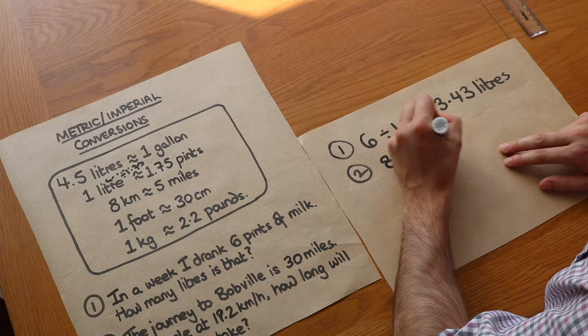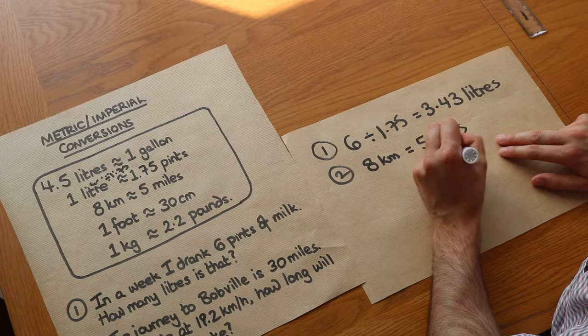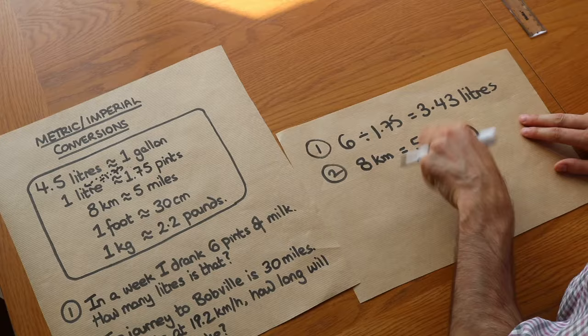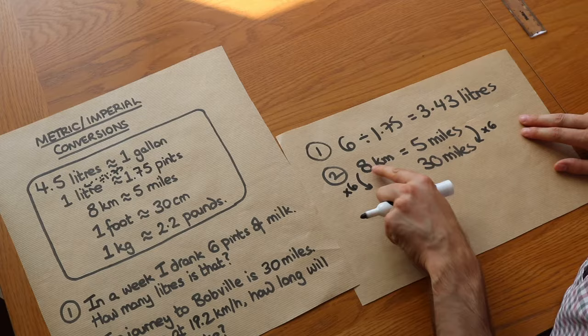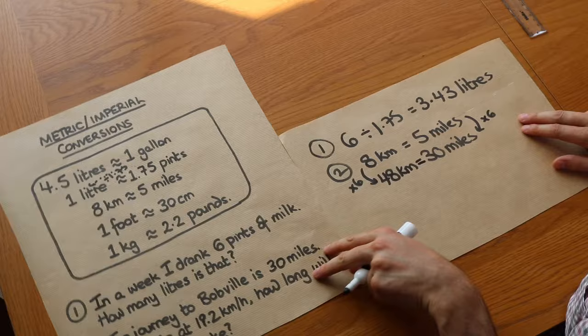So if we've got that 8 kilometres is equal to 5 miles approximately, then if we have 30 miles, can you see that that's 6 times more? 30 is 6 times more than 5, and therefore we've got 6 times as many kilometres. So 8 times 6 is 48 kilometres.